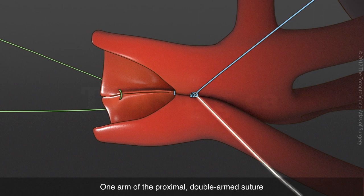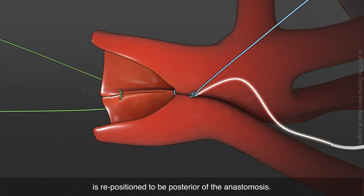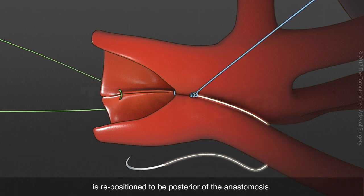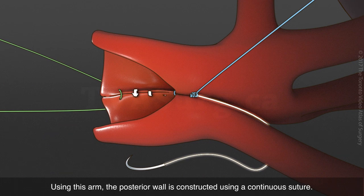One arm of the proximal double-armed suture is repositioned to be posterior of the anastomosis. Using this arm, the posterior wall is constructed using a continuous suture.